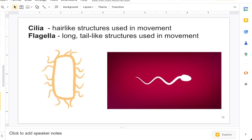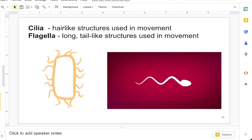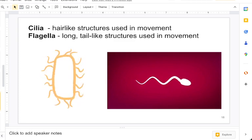Cilia and flagella are not on all cells, but cells that do have them, they can help with locomotion or movement. Cilia are hair-like structures used in movement. They are found in, for example, animals such as humans.